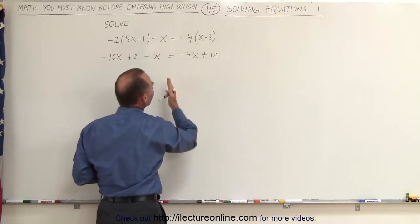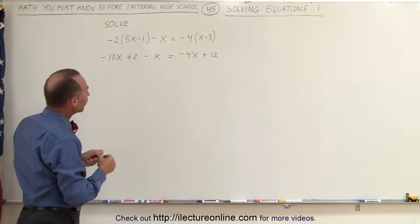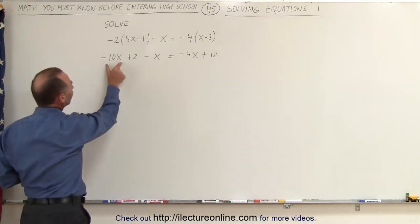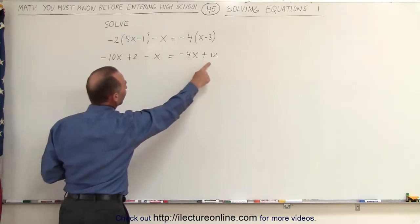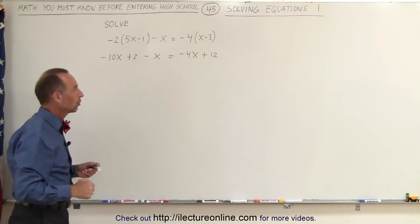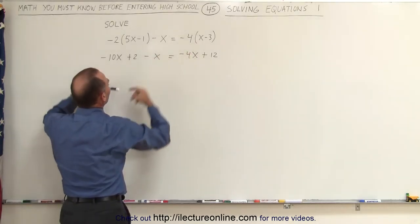Notice how I write the equal sign in the same place, and that's the preferred method. The next step is to move all the terms that have an x in them to the left side equation, and all the terms that do not have an x in them to the right side of the equation. So in some cases these are already on the left side, but we need to move this to the left side.